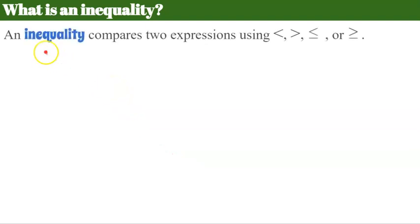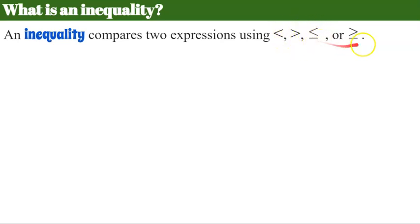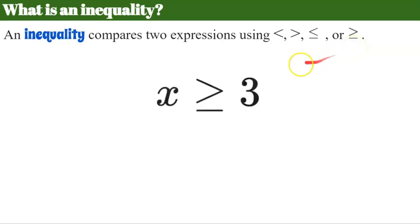Let's first understand what an inequality is. An inequality compares two expressions using the symbols less than, greater than, less than or equal to, or greater than or equal to. Here is an example of an inequality: x is greater than or equal to 3.